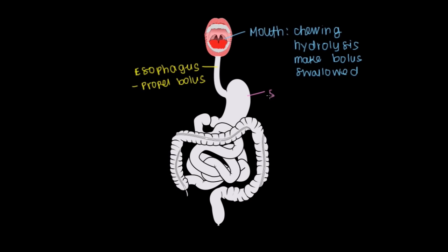Now we get to the stomach — a lot of action going on in the stomach, one of my favorite parts of the GI tract. The stomach is responsible for multiple things, including churning, which is a lot like chewing except that there are more dimensions of contraction affecting the food and breaking it down. We also have hydrolysis going on here — the enzyme-assisted breakdown of food.